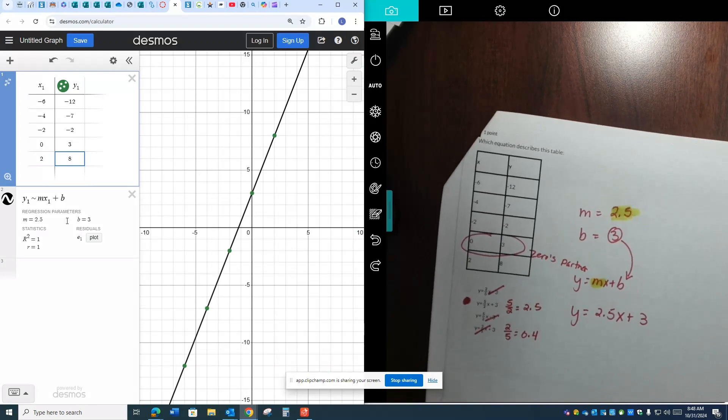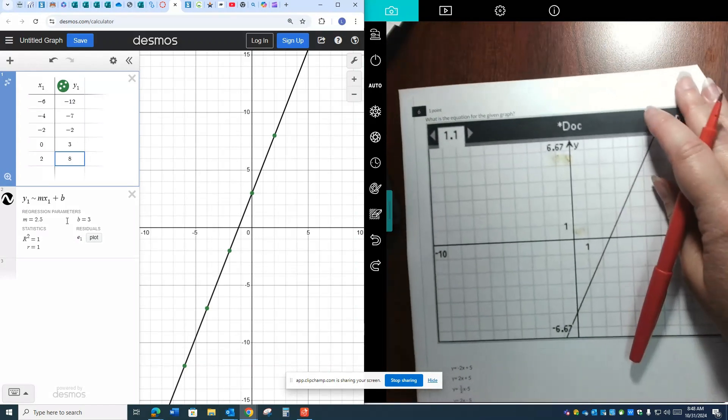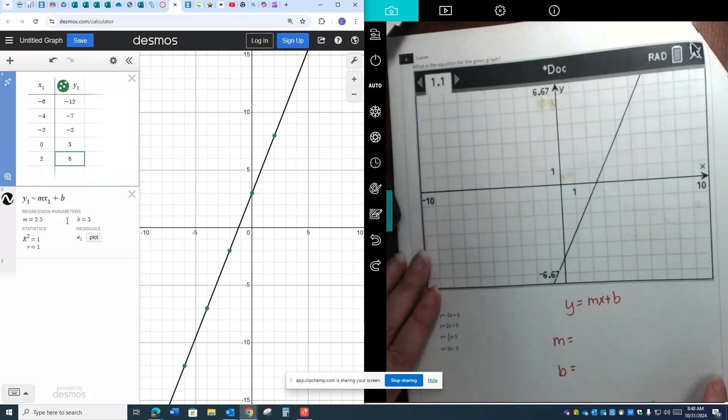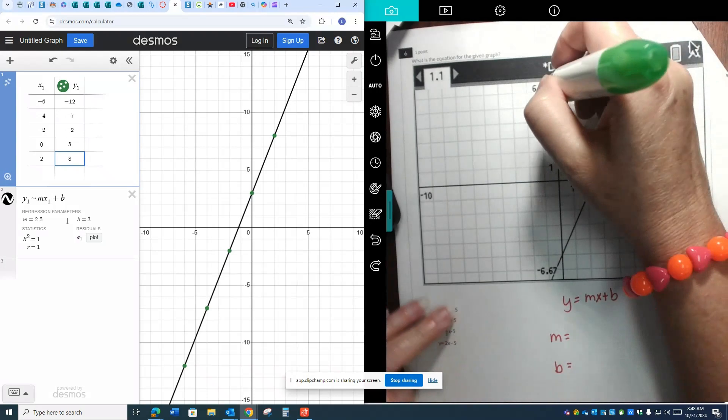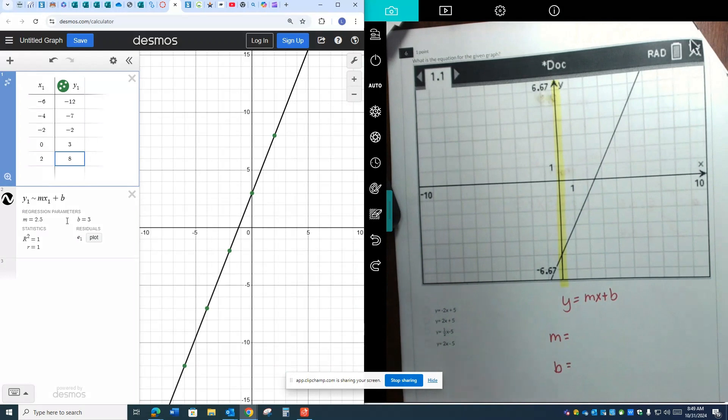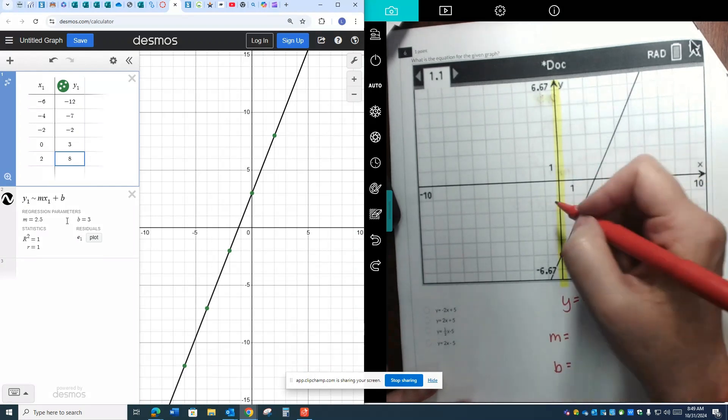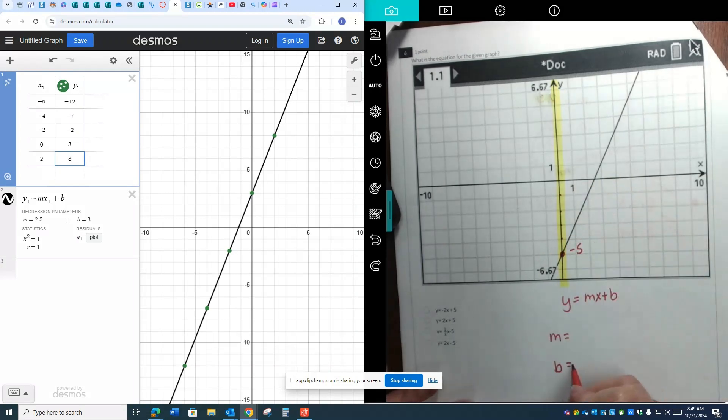All right, next. It says what's the equation for this given graph? Again, we're filling in this format. So I need to figure out what the m and the b is. Now I can't really use Desmos for this because it didn't give me any points or a table. So I'm going to have to figure it out. So the easiest thing to see is the y-intercept. There's my y-axis. And this line is crossing that yellow line right here at this point. And that is at the 1, 2, 3, 4, negative 5. That is my b.